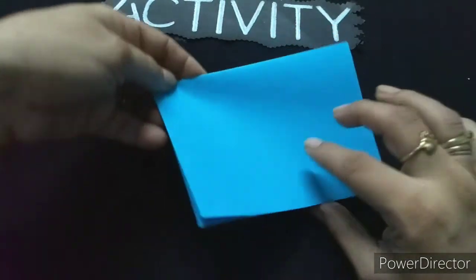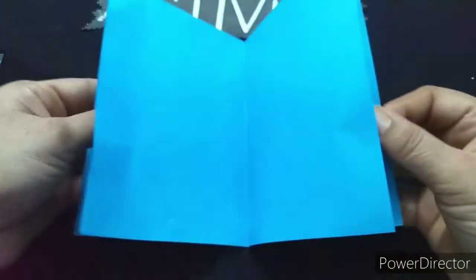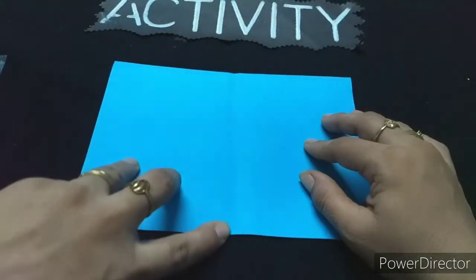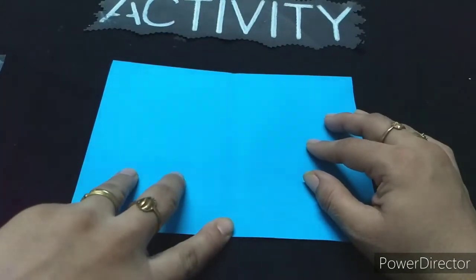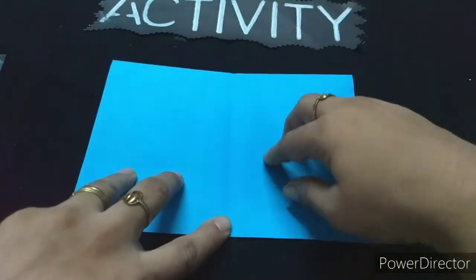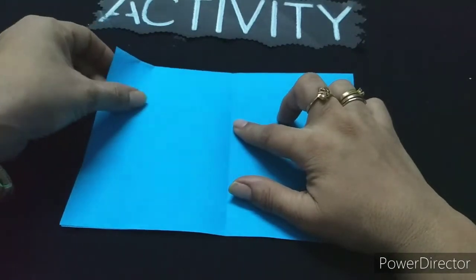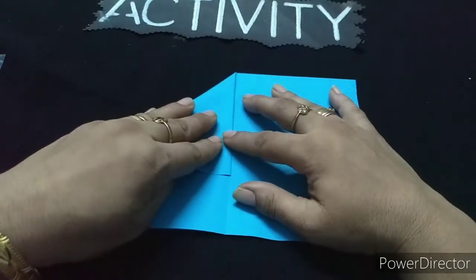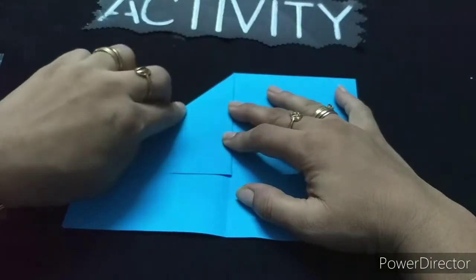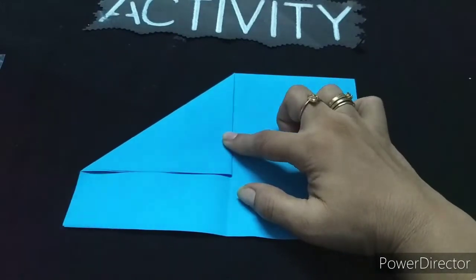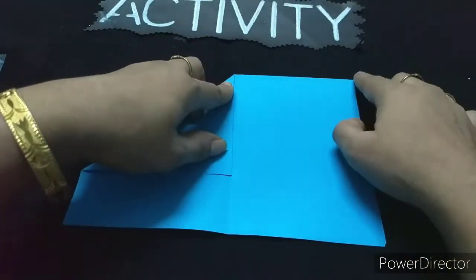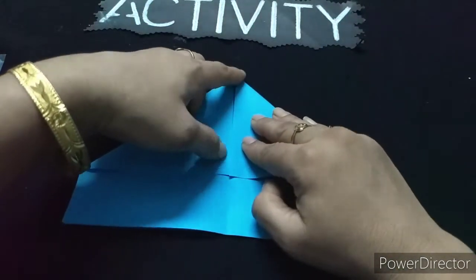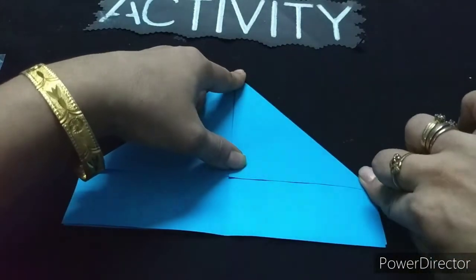Now we are going to open this paper here. Children, can you see a line in the center? Now we will fold it in the center line and press it as well.